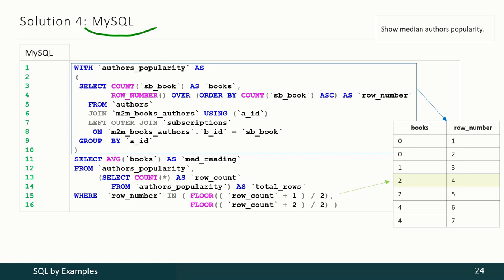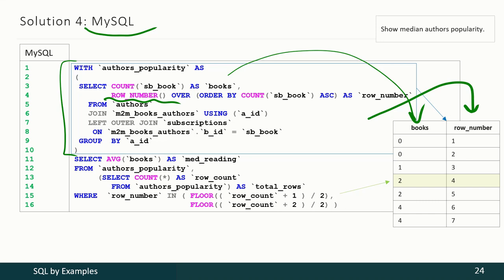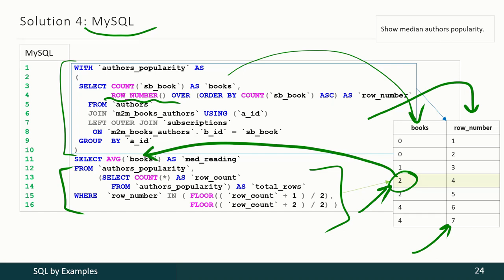When we have only one central value, that is the result. If we have two central values, the AVG function will produce the average of those two values, giving us the final expected result. With Microsoft SQL Server the solution is simpler: we produce the initial data set of books taken per author, then use a PERCENTILE function telling it to calculate the median value, and we have to use the DISTINCT keyword, otherwise this function will produce as many rows as the initial data set has, but we only need one row.